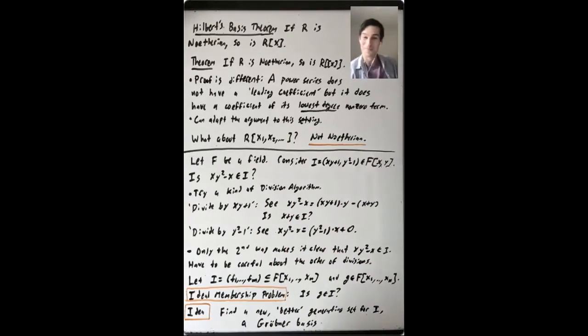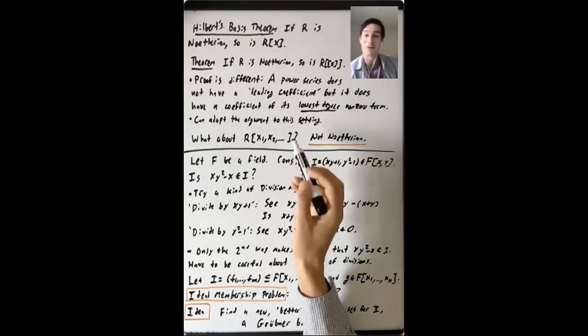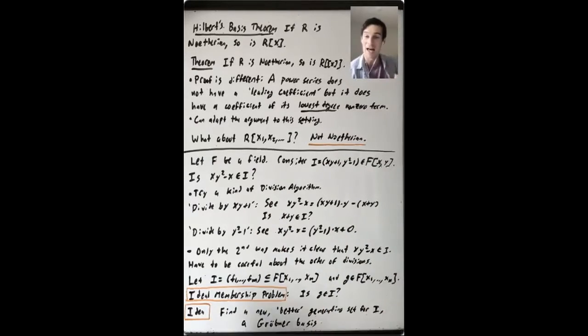up through all X1, X2, dot dot dot. That was our example of an ideal that's not finitely generated.